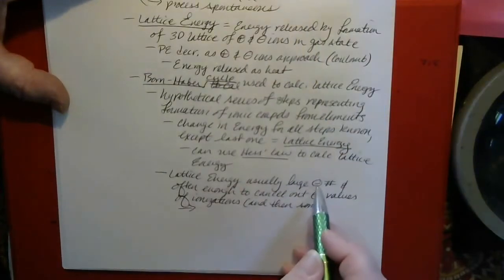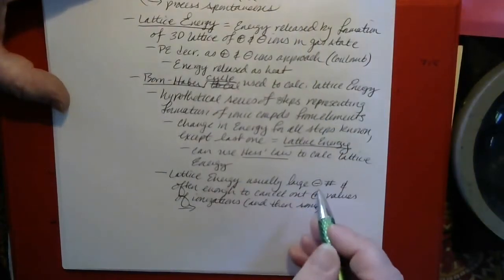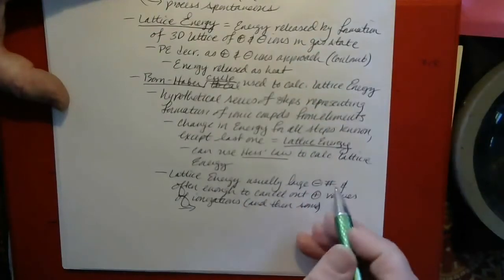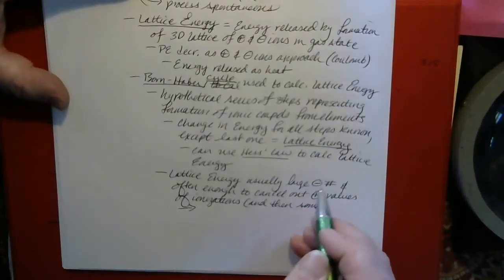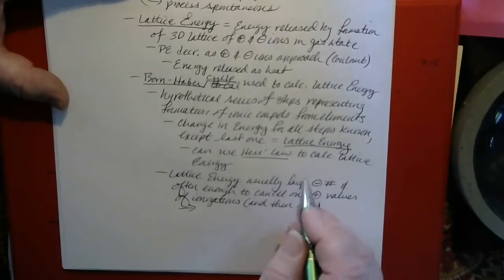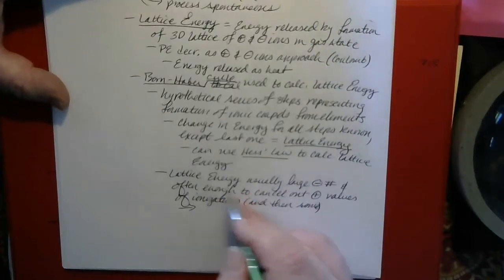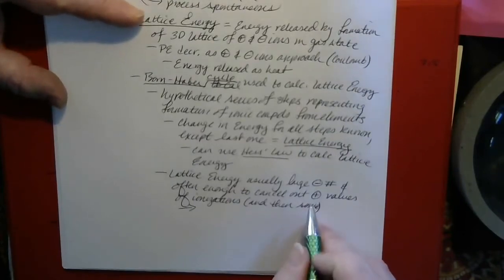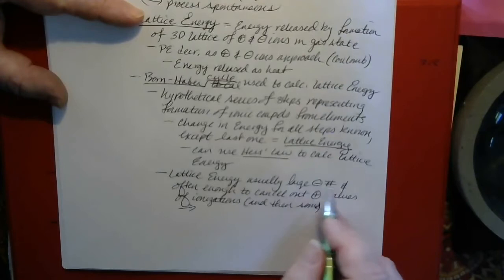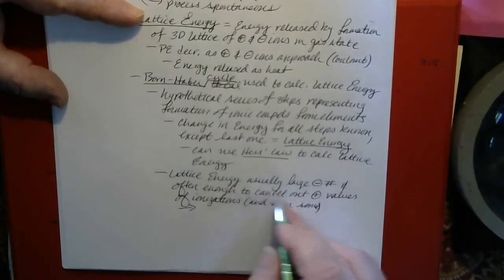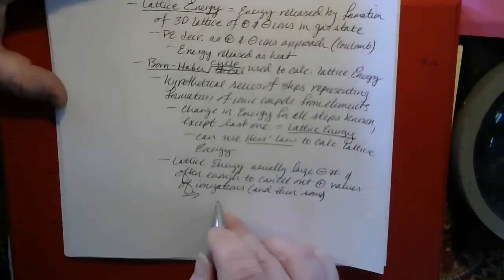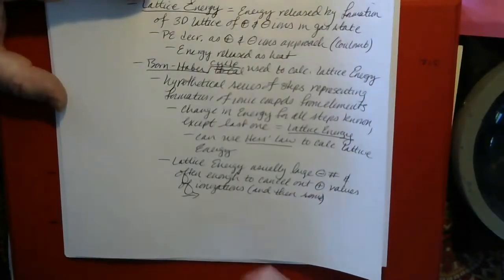The end result — remember, negative tends to mean spontaneous in terms of energy changes. Negative means energy is released, and processes that release energy tend to be spontaneous, whereas positive means energy is taken in and those processes tend not to be spontaneous. So if the process with the negative energy change overwhelms the process with the positive energy change, that means lattice formation tends to be spontaneous.